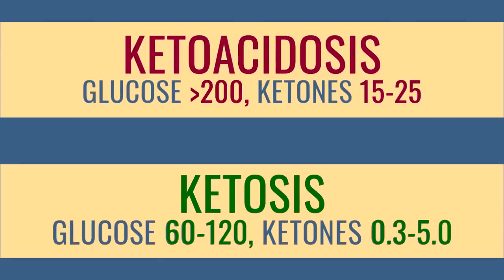So the first difference: ketoacidosis has really high blood sugars and really high ketones. Ketosis has blood sugars between 80 and 120, and ketones that range from 0.2 or 0.3 up to maybe 5, 6, or 7 depending on whether you're fasting.